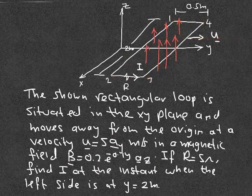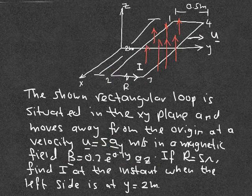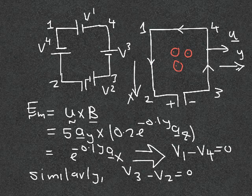All four wires move with the same velocity u in the y-direction. The important thing to remember is that B on one side is different from B on the other side, because B is a function of y. If y equals 2 on one edge, then y equals 2.5 on the other. This is an alternative way of solving the problem: we consider it as four batteries and calculate the value of each.